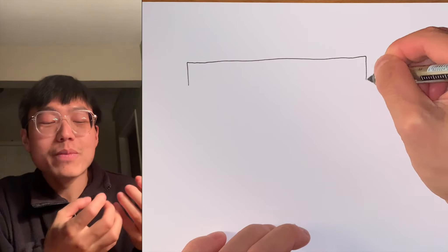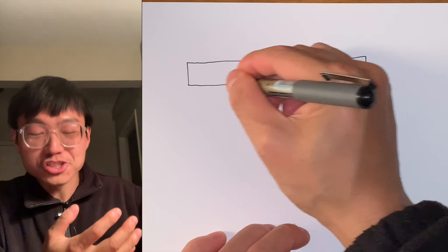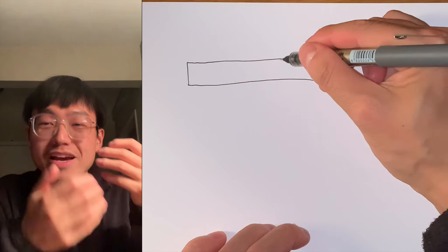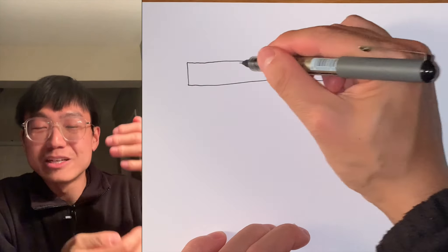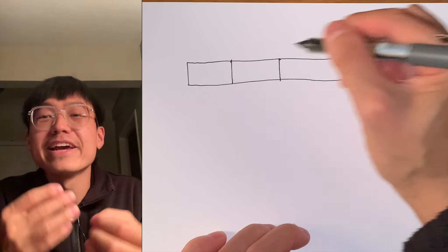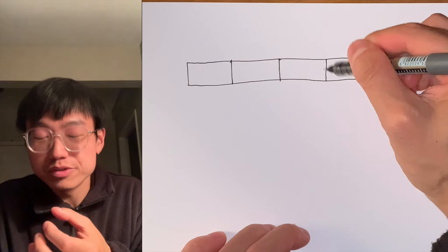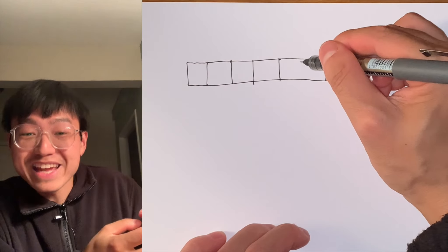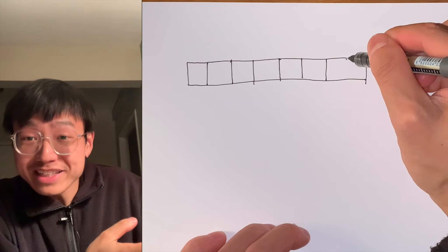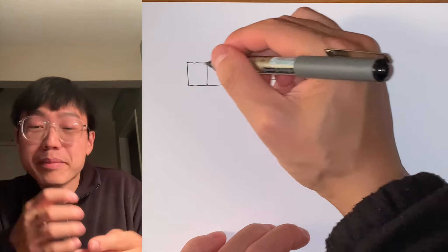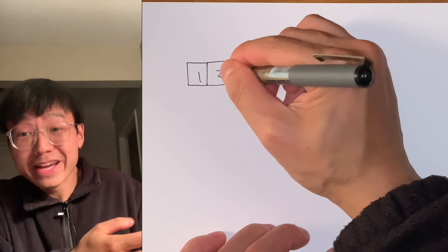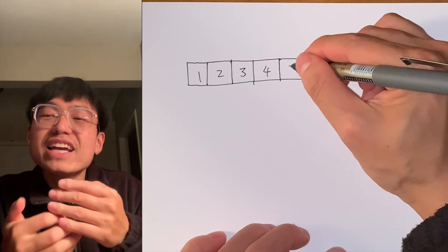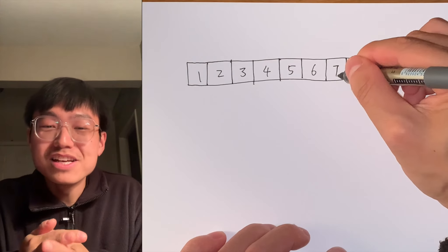First, let's talk about array insertion. Inserting a new element into an array can take many forms, such as inserting a new element at the end of the array, at the beginning of the array, or at any given index inside the array.